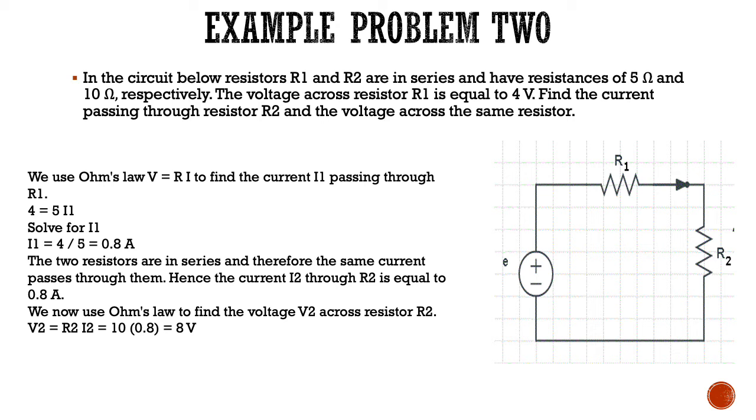Now we use Ohm's law to find the voltage V2, which is the voltage across resistor 2. We set it up by saying V2 equals resistor 2 times current 2, which we know is the same as current 1 in this circuit. Solving this, we get 10 times 0.8, and we get voltage 2 across resistor 2 is 8 volts.